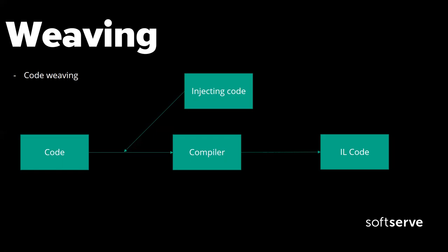In .NET, I'm not really sure if we have code weaving. There is code weaving for Java, which is AspectJ. The idea is you have a compiler for AspectJ with your own templates and languages, and you have different events — for example, before entering a method, after entering, after leaving the method. You have what are called juncture points, and they inject code in the middle using this compiler. This compiler generates code sent to the Java compiler, which generates bytecode. But in .NET, we don't have such things.